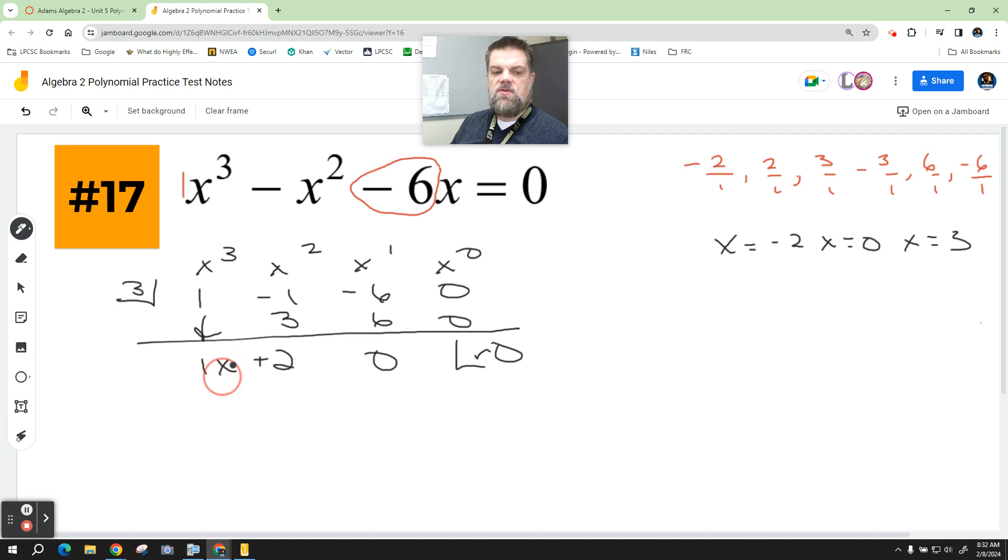This becomes x squared, this becomes x, and this becomes plus 0. So I have x squared plus 2x.